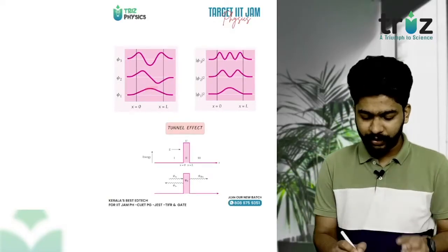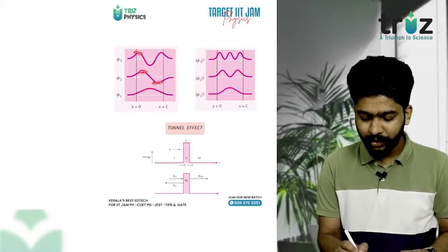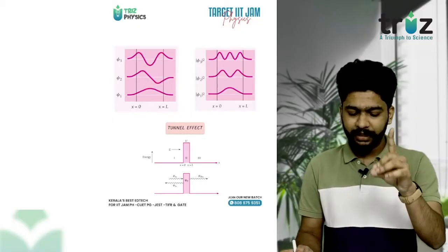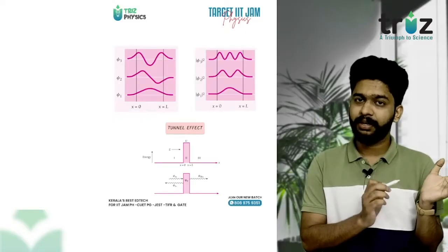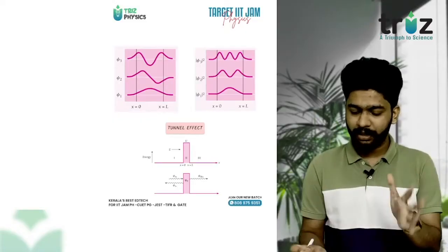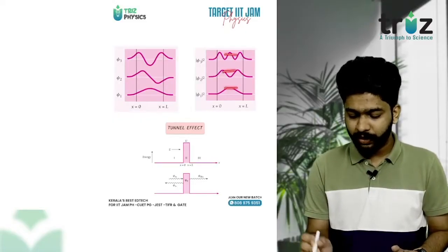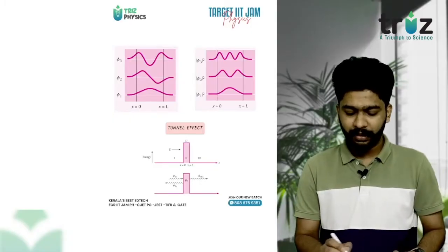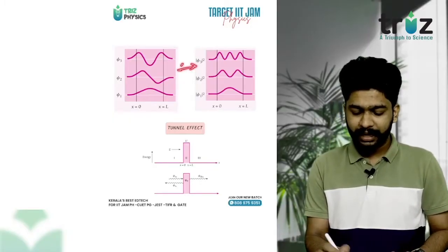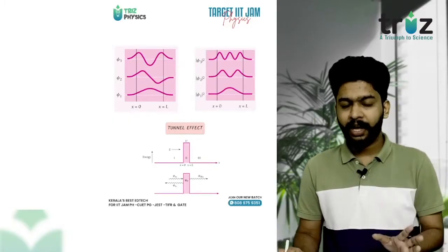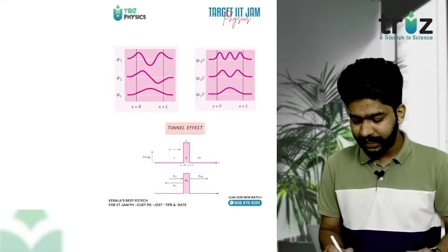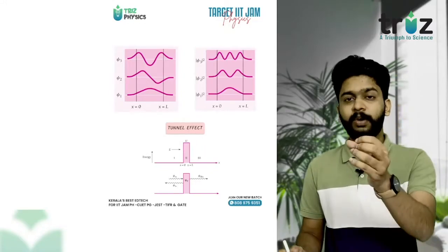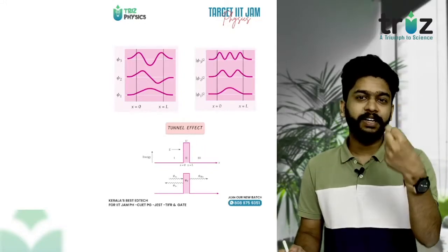The first state has one node, the second state has two nodes. Comparing finite and infinite potential wells: the |ψ|² probability density graphs are similar in shape. The wave functions in the finite well penetrate into the classically forbidden region, unlike the infinite box.